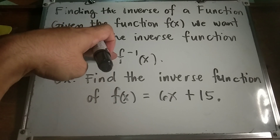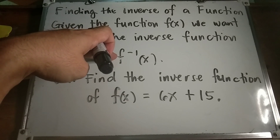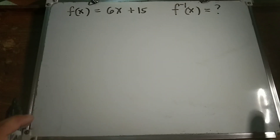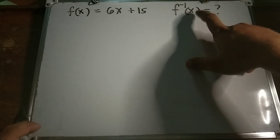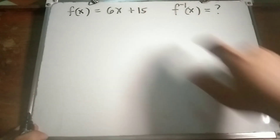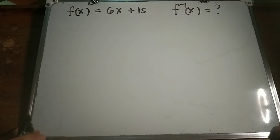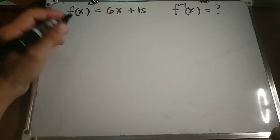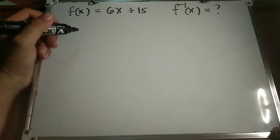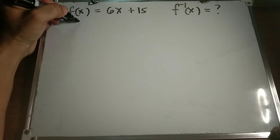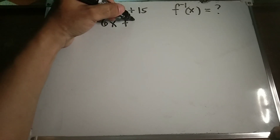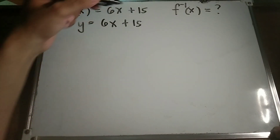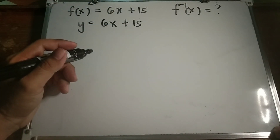For example, find the inverse function of f of x equals 6x plus 15. We want to find out what is the inverse function of this function. The first step is to replace f of x with y, so y equals 6x plus 15. This is done to make the rest of the process easier.